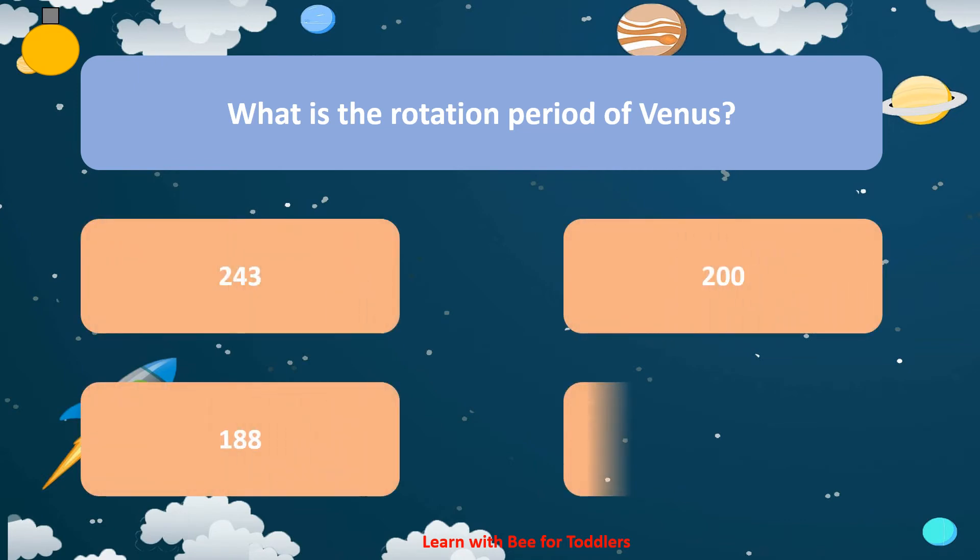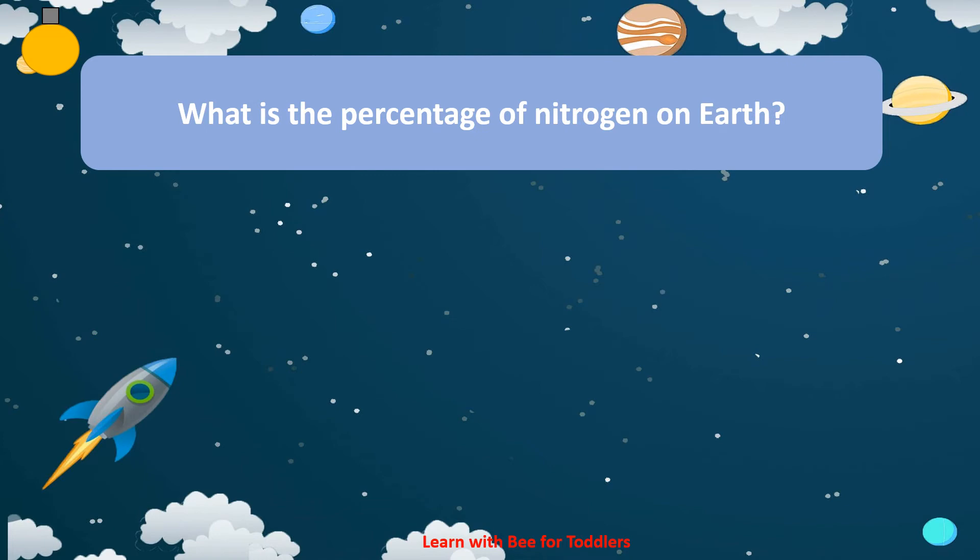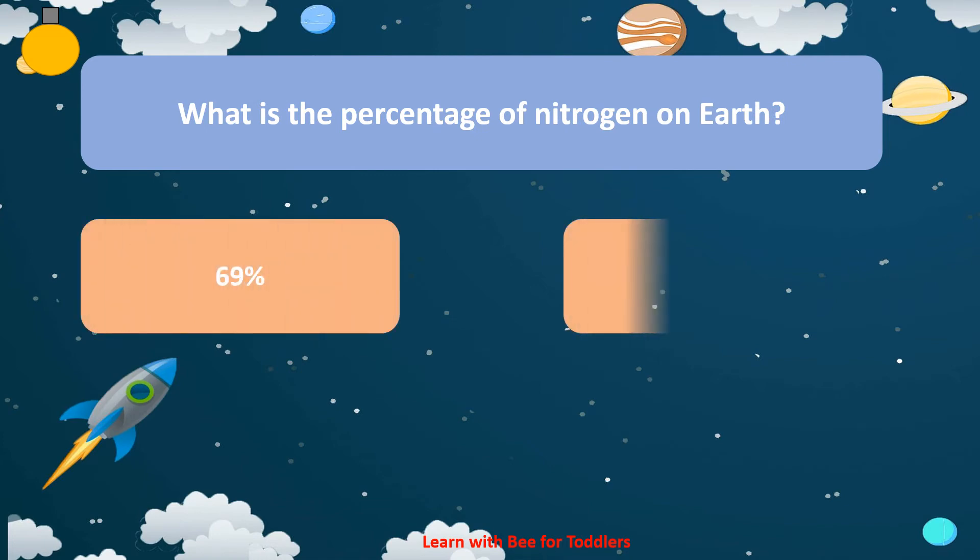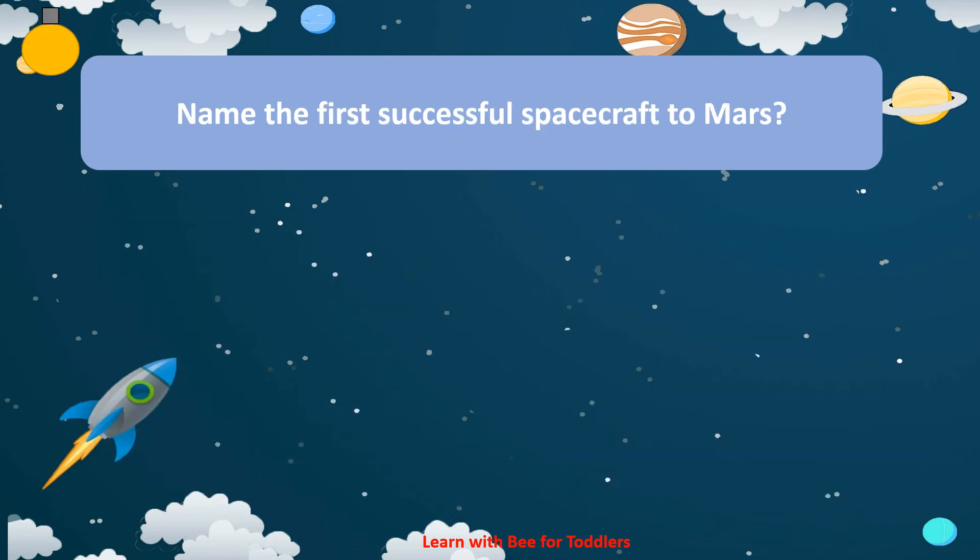200. 188. 190. 243. What is the percentage of nitrogen on Earth? 69%. 70%. 56%. 78%. 78%. Name the first successful spacecraft to Mars. Mariner 4.